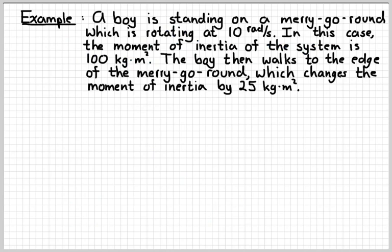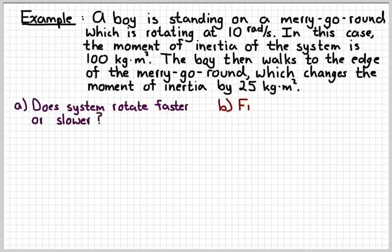Here's another example. Imagine that you have a small boy standing on a merry-go-round, which is rotating at a rate of 10 radians per second. In this case, the moment of inertia of the system, meaning the boy and the merry-go-round together, is 100 kg meter squared. The boy then walks to the edge of the merry-go-round, which changes the moment of inertia by 25 kg meter squared. There's a couple of questions we want to ask. First of all, does the system rotate faster or slower? And second of all, what's the new angular velocity? Can we figure that out using conservation of angular momentum?